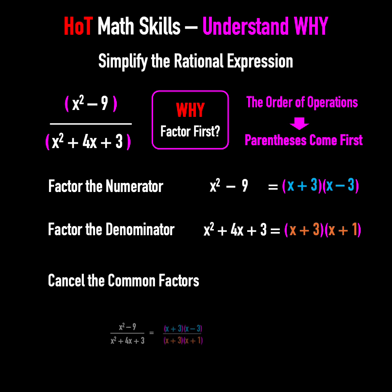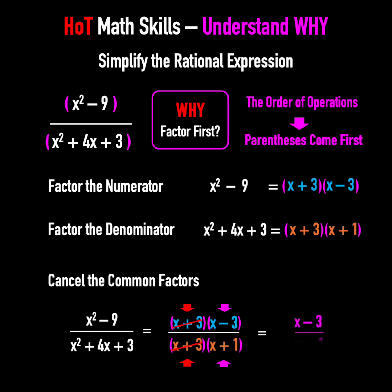Now we cancel the common factors. Factors x plus 3 appear in both the numerator and the denominator. Let's cancel them. The remaining terms are x minus 3 divided by x plus 1. We're done. Thank you.